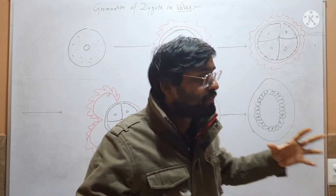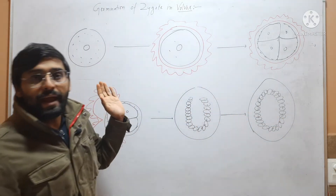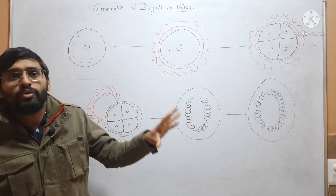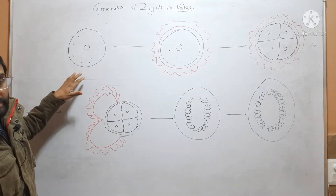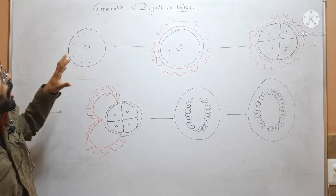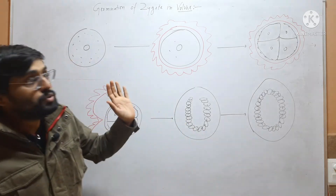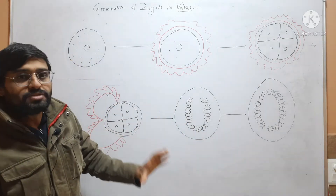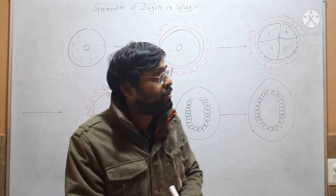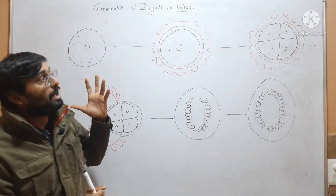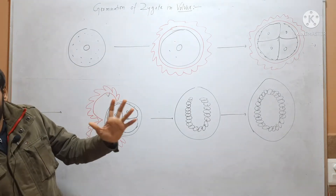After fusion of male gamete and egg, or female gamete, a zygote is formed. In this video, we will discuss about germination of zygote in Volvox.